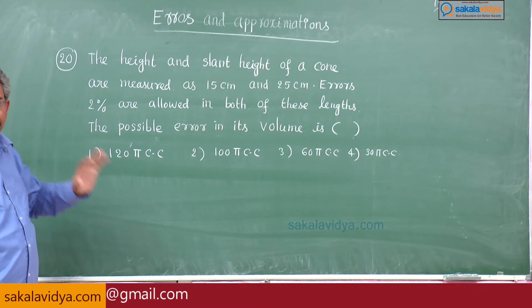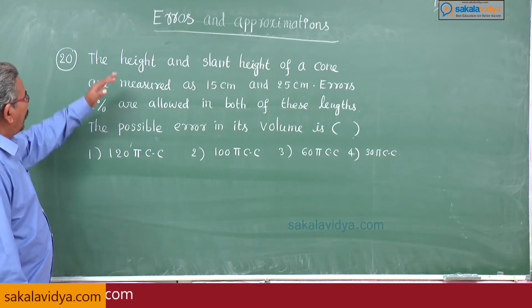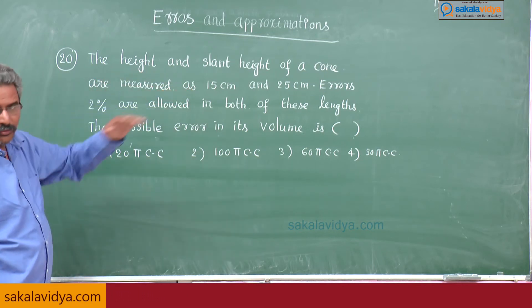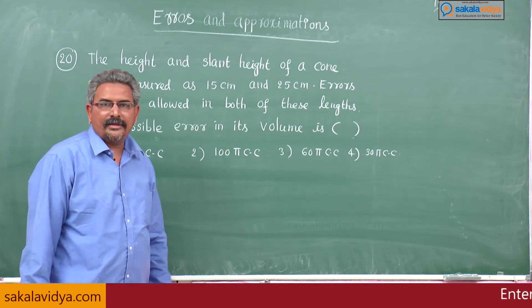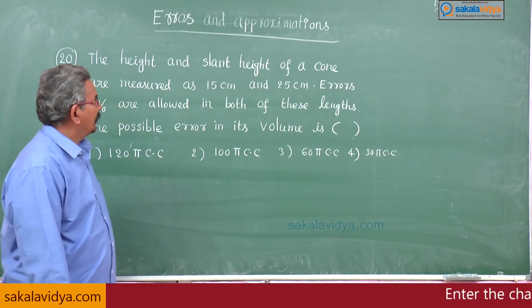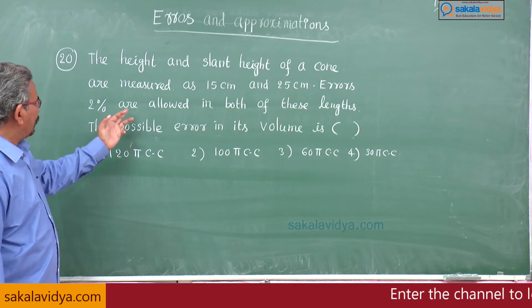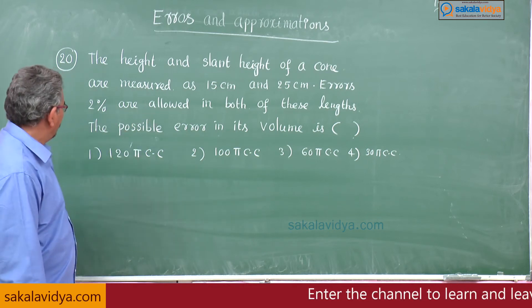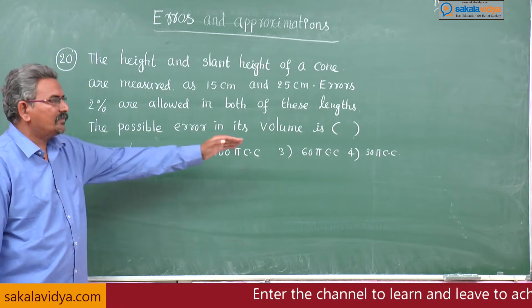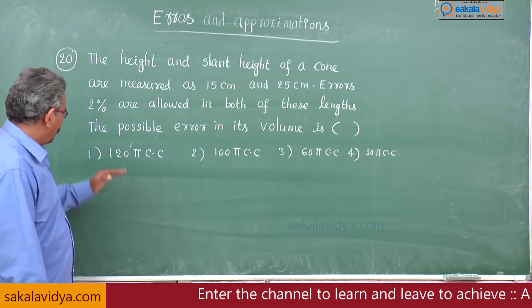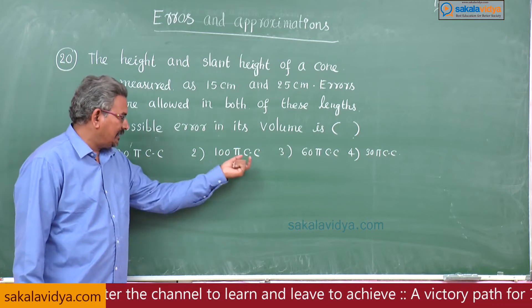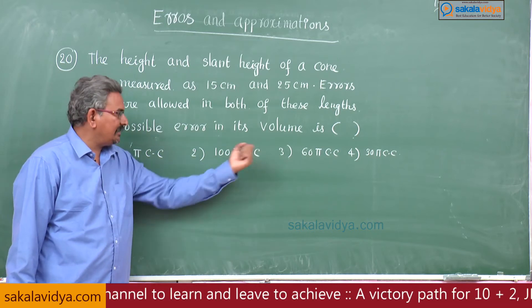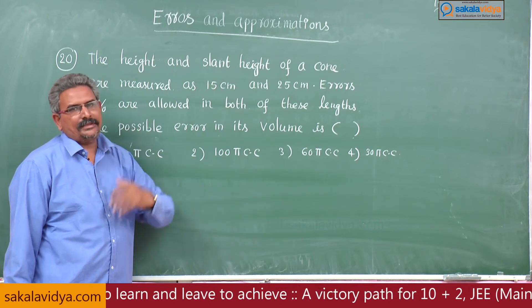20th problem: the height and slant height of a cone are measured as 15 centimeters and 25 centimeters. Errors 2 percent are allowed in both of these lengths. The possible error in its volume is: 120π cc, 100π cc, 60π cc, or 30π cc.